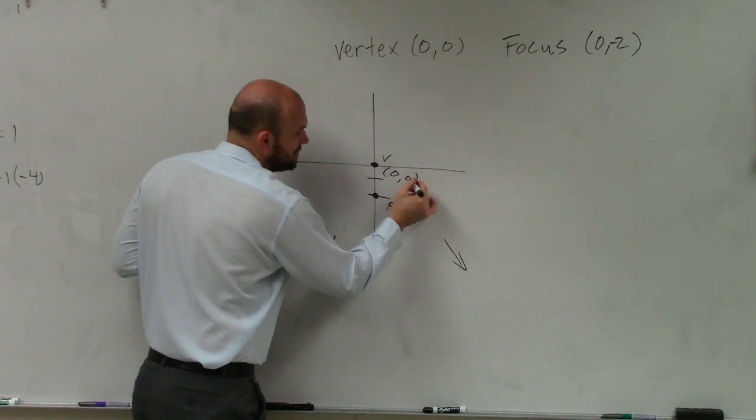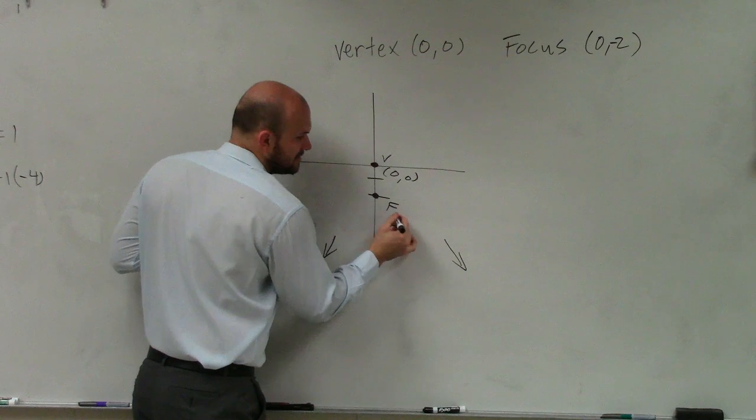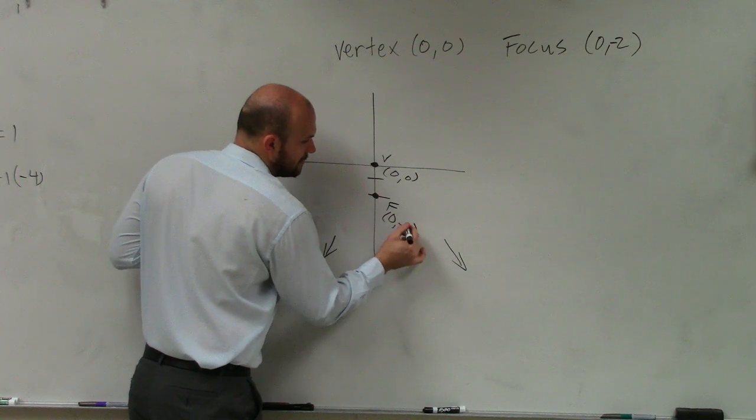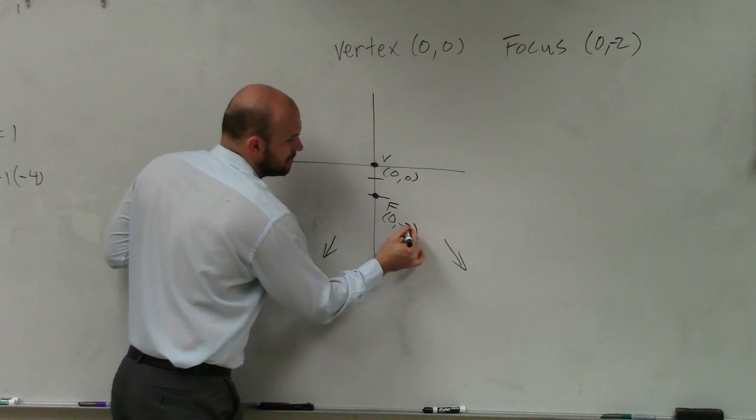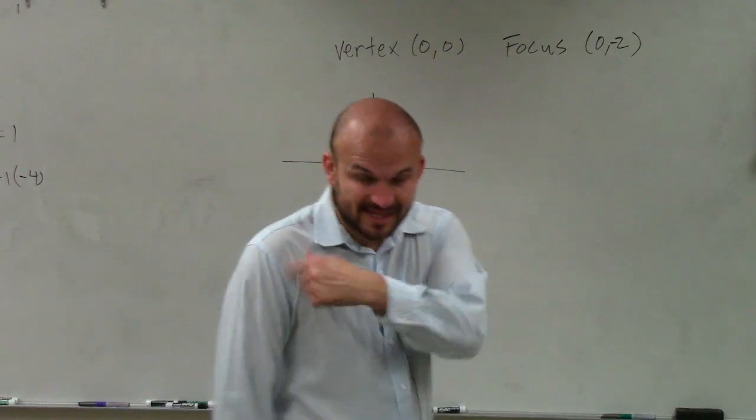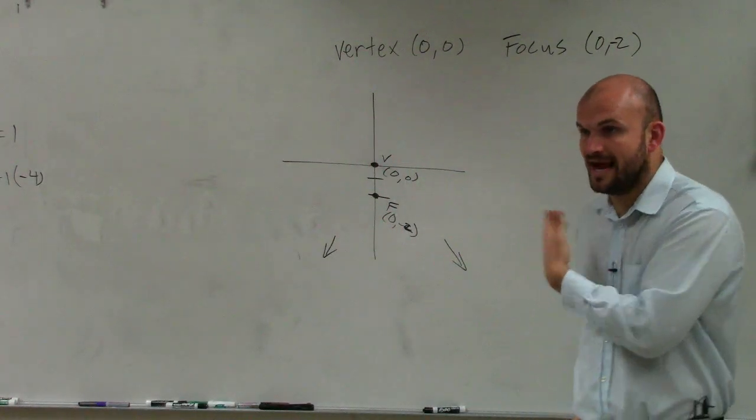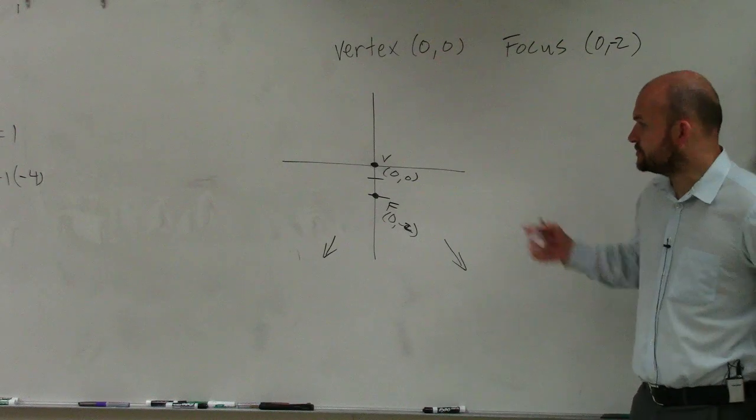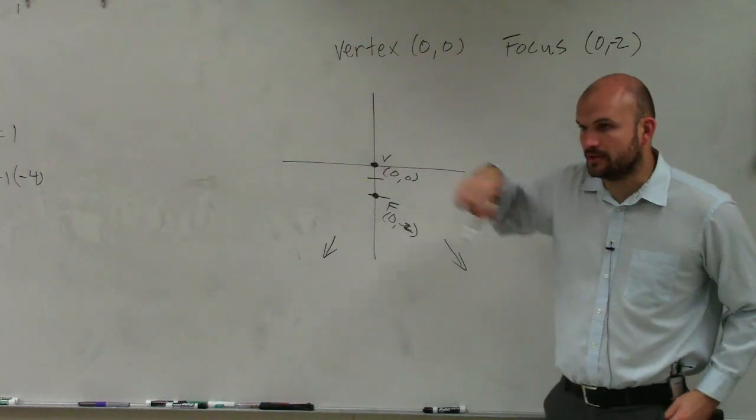So that's 0, 0. And this is going to be 0, negative 2. We'll go over a problem with that. But in this example, you can't have one, right? It has to be going down. Because you couldn't have anything like that.